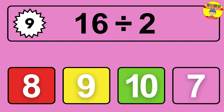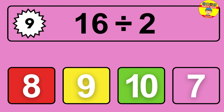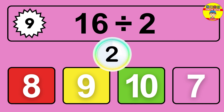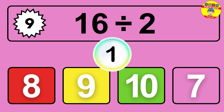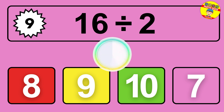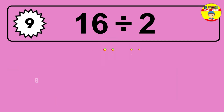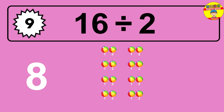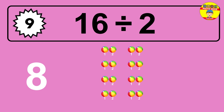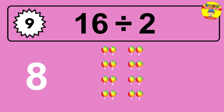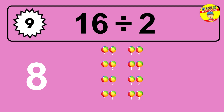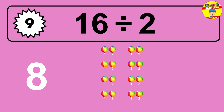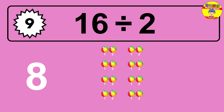16 divided by 2 is time to think. Let's go to the solution. Divide the number 16 by 2. Each group contains 2 units, so dividing 16 by 2 results in 8 equal groups. Thus the result is 16 divided by 2 equals 8.